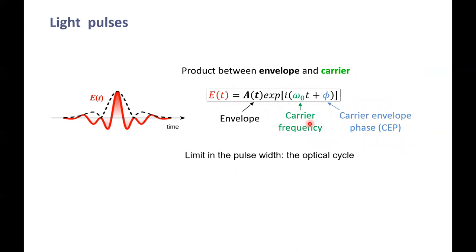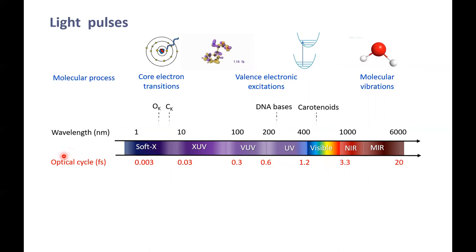Let's talk about the carrier frequency. This is important because it limits the minimum temporal duration that I can achieve with a pulse, which is given by the optical cycle. Looking at the electromagnetic spectrum, in the visible the optical cycle is 2 femtoseconds — this is the minimum duration of a pulse in the visible. If I want to have attosecond pulses, I need to go to the XUV or soft X-ray regime, to shorter wavelengths. But the wavelength not only determines the optical cycle and minimum temporal duration — it also determines the kind of molecular process I can observe.